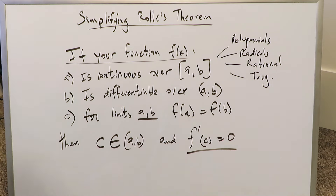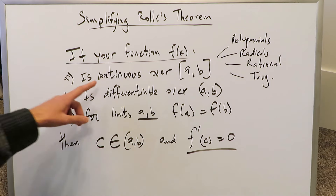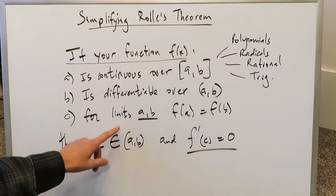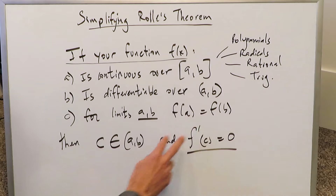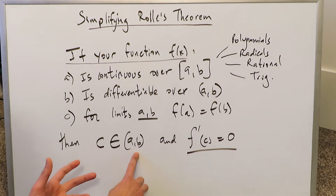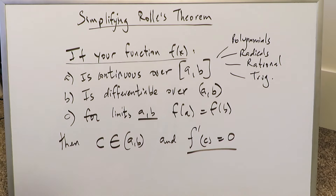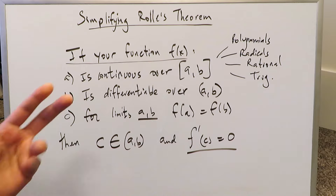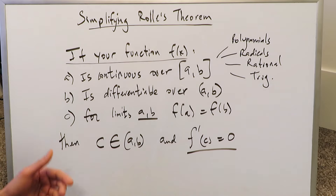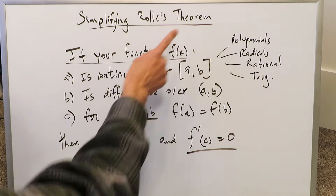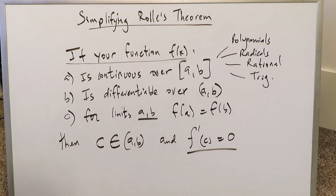That is not very difficult to understand. You have a continuous, differentiable function over the interval. If you satisfy these conditions, you can demonstrate that there exists a point where the derivative equals 0, giving a horizontal tangent line. There are some situations where you know upfront this would not be the case, and others where the Rolle's Theorem would very likely apply.